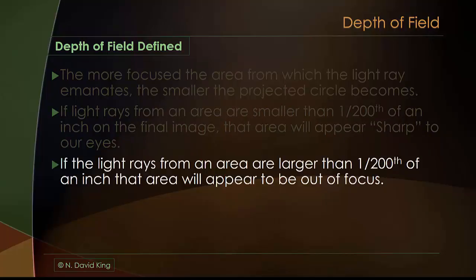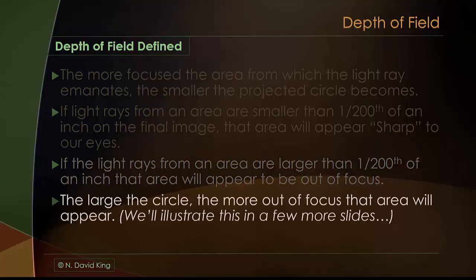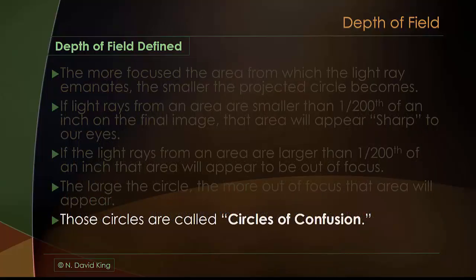If light rays from another area — farther away or closer — are larger than a two-hundredth of an inch, then they're going to look like they're out of focus; they'll be soft on the final print. The larger the circle, the more out of focus that area will appear. Immediately as the point of focus moves away from the plane of critical focus, the projected image circles start to get bigger. But it's not until they reach that magic number of one two-hundredth of an inch that we start to see things as out of focus. Those circles projected on the image plane are called circles of confusion.